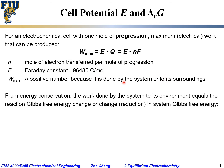From energy conservation, the system does work to its environment in the form of electrical work. The work done by the system through this electrochemical reaction would be equal to the reaction Gibbs free energy change — the change in system free energy from final state minus initial state. That energy is used to do work on the system's surroundings in the form of electrical work.